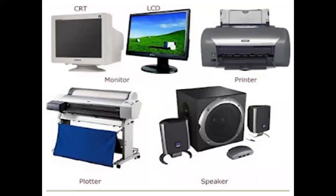So let's check out some pictures of the output devices. We've got the CRT, we have the LCD, we have the printer, then we have the speaker, and we have the plotter. So all these are your output devices. The speaker gives you the audio form, the printer gives us the hard copy, and the monitor gives us the visual form.